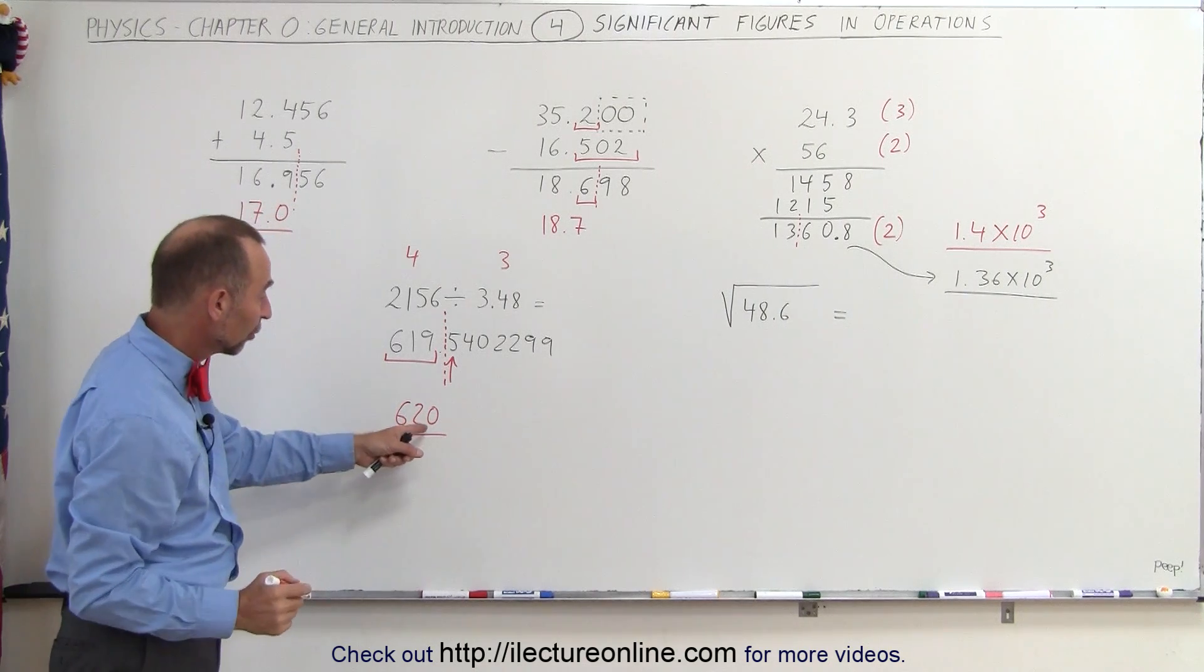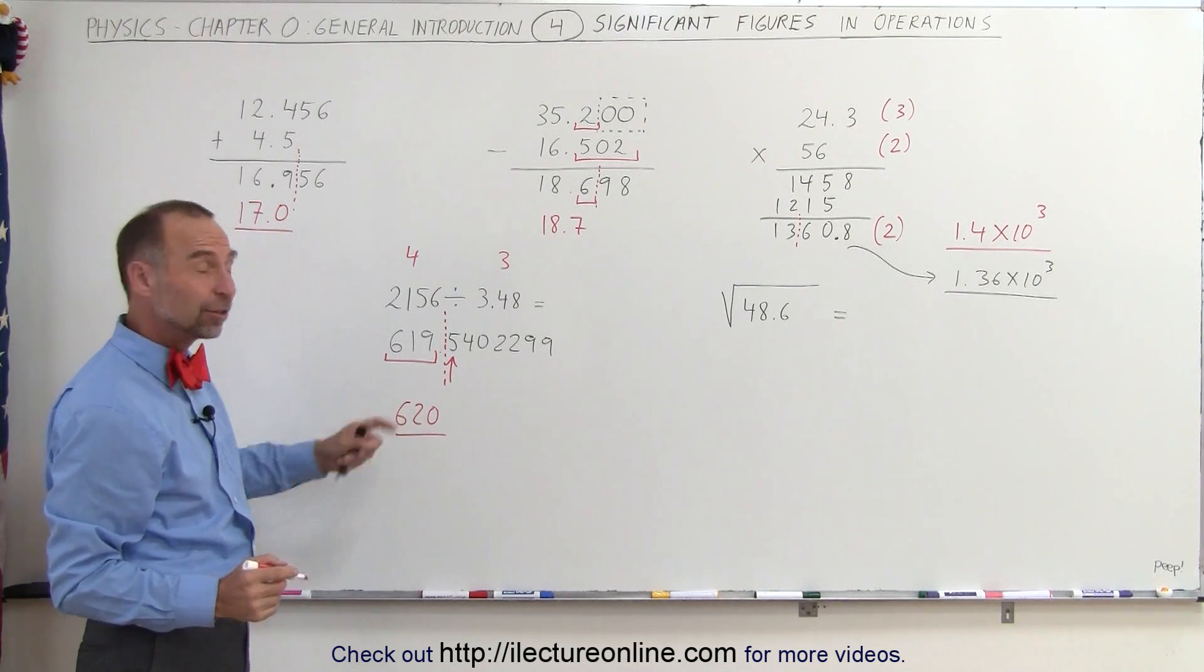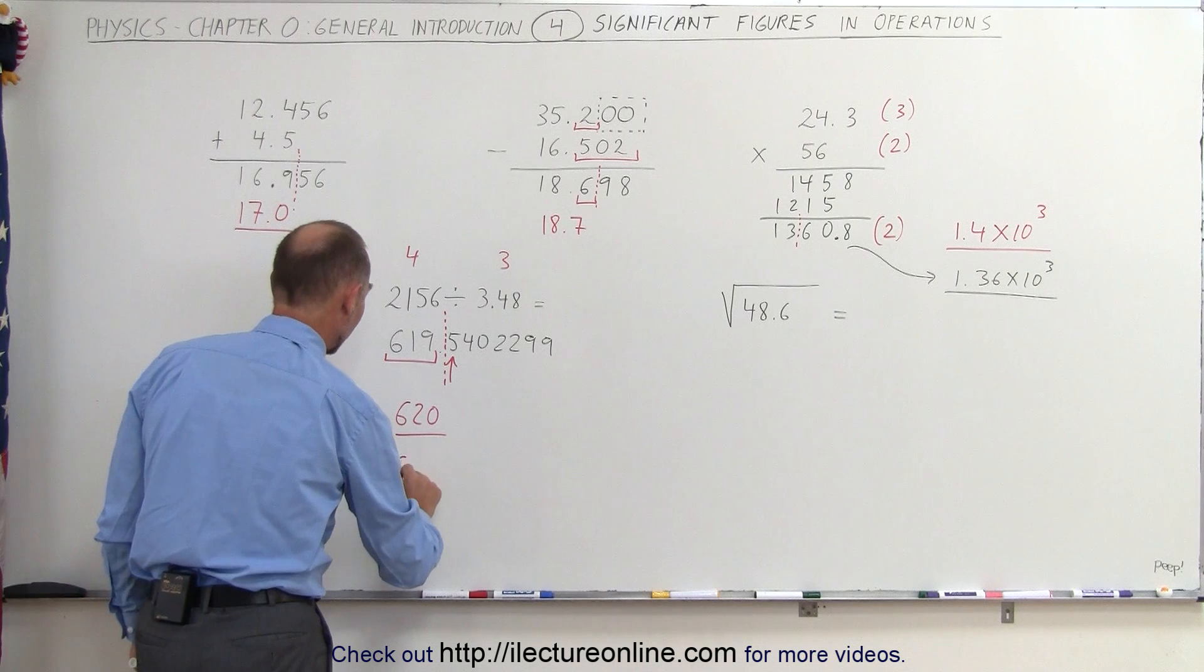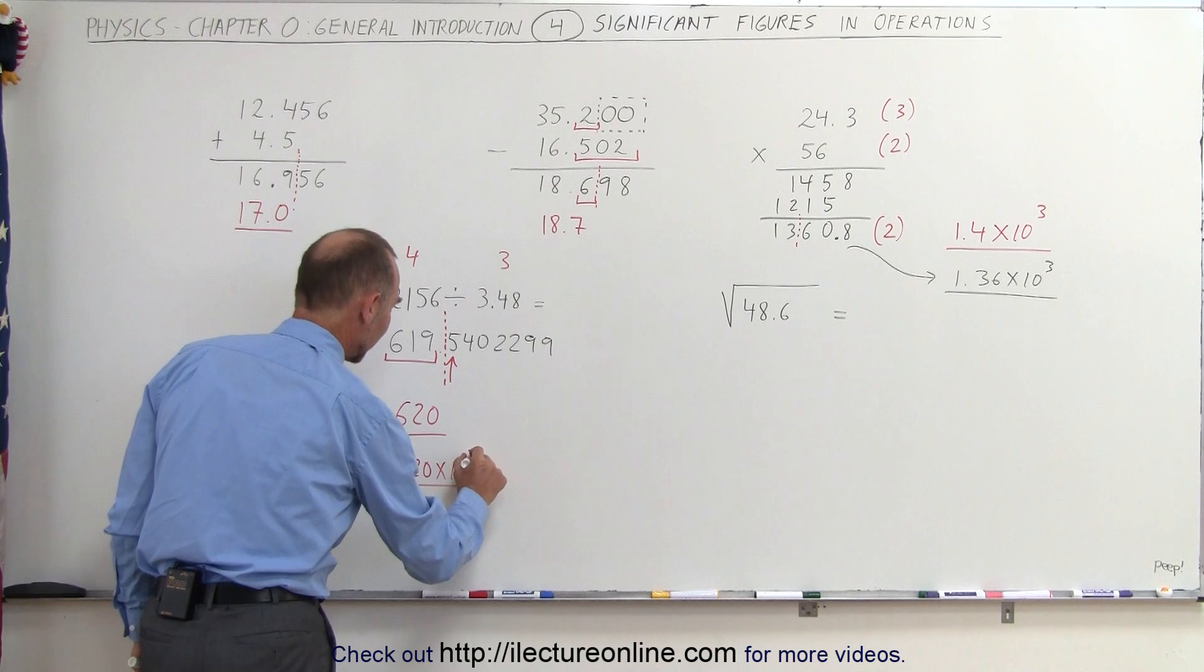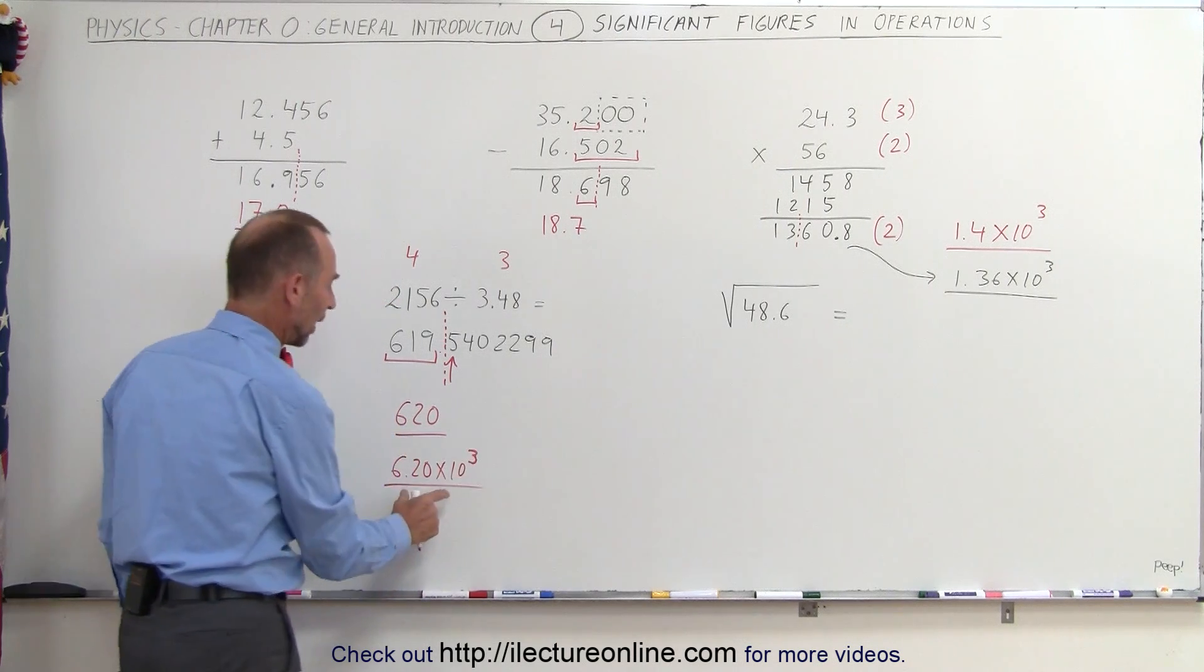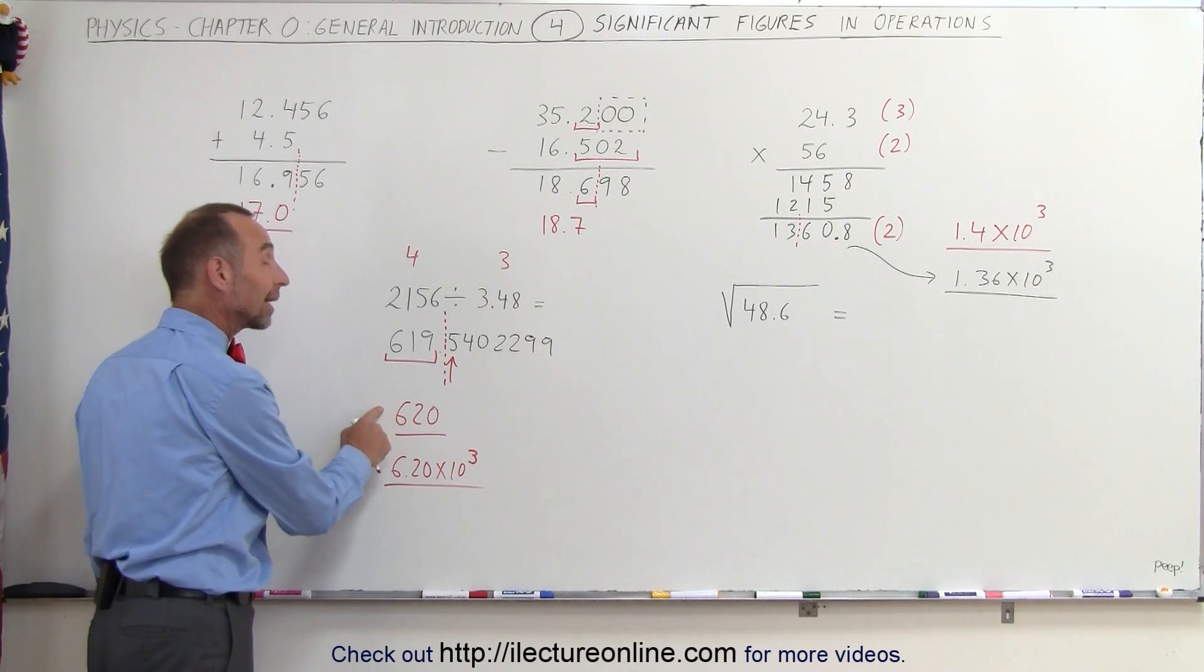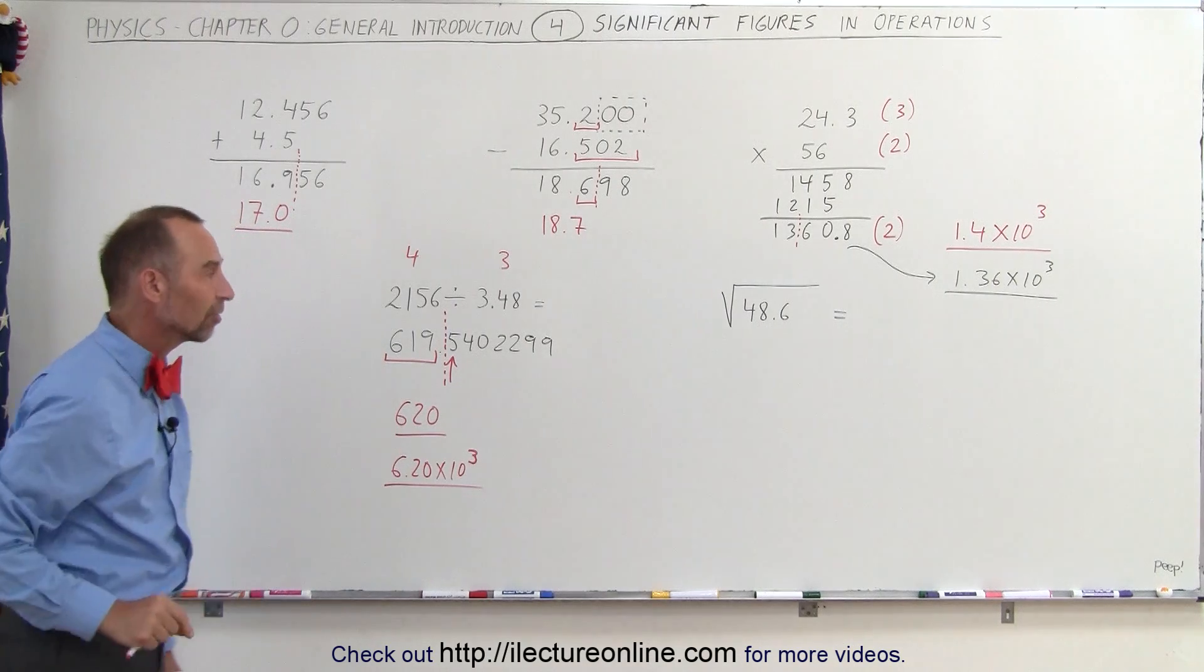Now again, there may be the possible confusion that this is significant or not. So you could also write it as 6.20 times 10 to the third. So depending upon what's acceptable in your classroom, you write it like this to be certain, or you write like that if you know your professor will accept that as a proper answer.